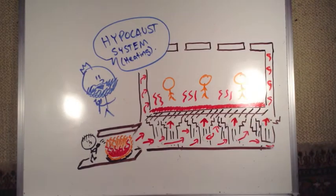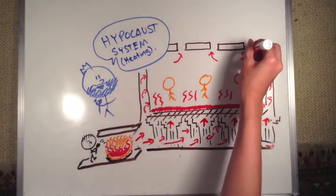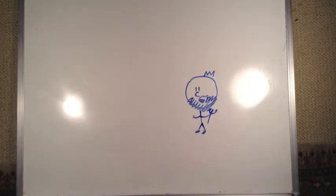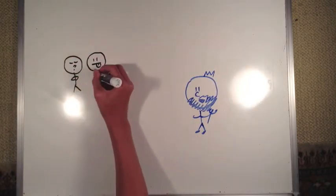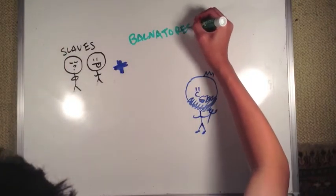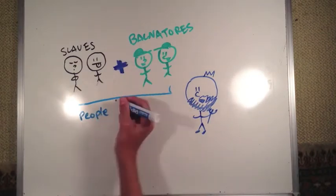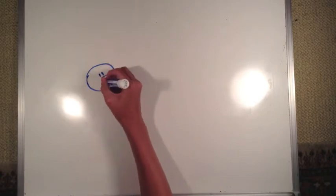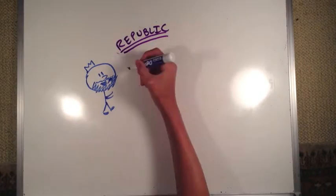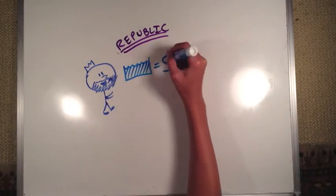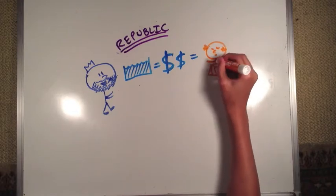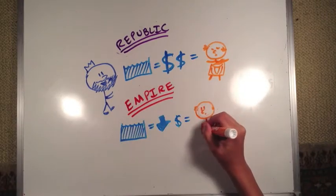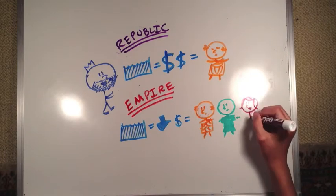There were people that ran the baths, obviously the slaves that helped people in the palaestra and hypocaust system, but also people called balnitores who coped with the running of the baths and stayed there and made people leave when they closed. As for how many baths there were, in the Roman Republic it was a luxury for the rich. However, with the expansion of the empire, baths became open to all people. At the end of the 4th century AD, there were about 11 public baths and 926 private baths.